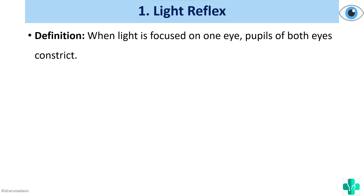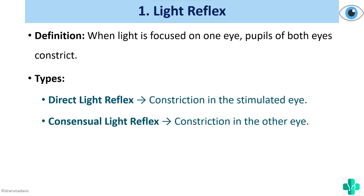What is light reflex? When light is focused on one eye, the pupils of both eyes constrict. Based on which eye constricts, we can divide into two types. Direct light reflex is the constriction of the pupil of that eye onto which the light was shown. Consensual or indirect light reflex is when you show light onto one eye and the pupil of the other eye constricts.